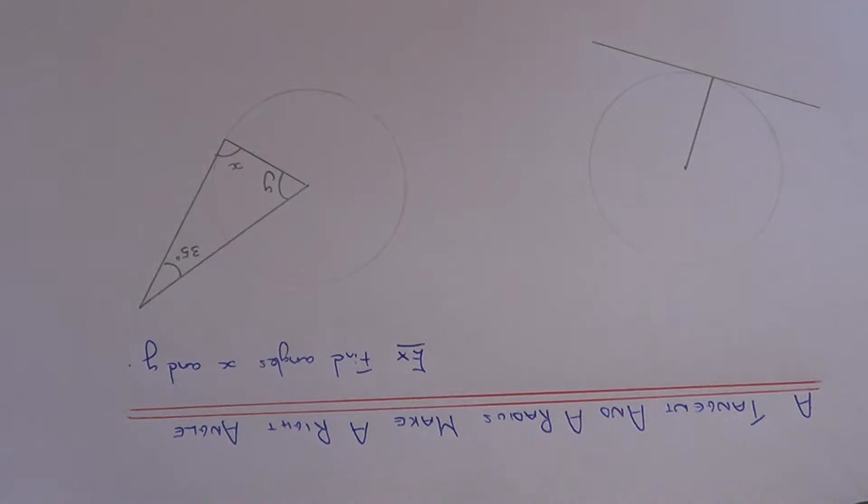So let me just quickly explain what this means. If we have a tangent, a tangent is the line which just touches the edge of a circle. So this line here is our tangent line.